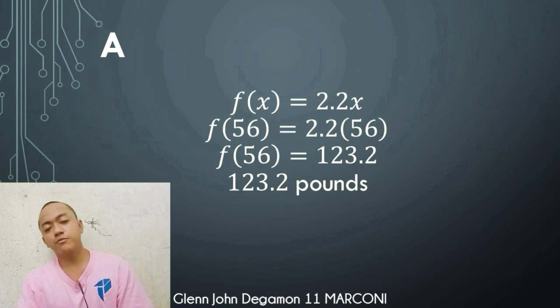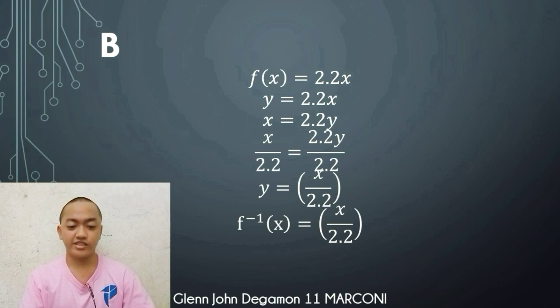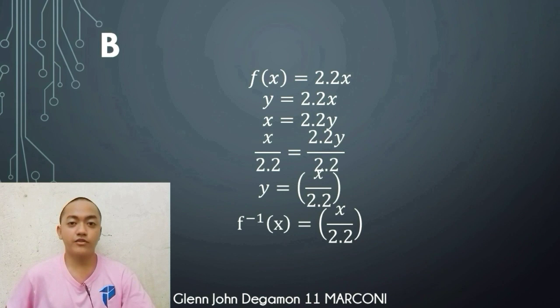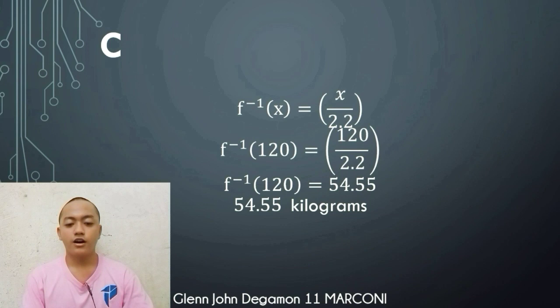For letter b, we find the inverse function. Starting with f of x equals 2.2x, let y equal f of x: y equals 2.2x. Swap variables: x equals 2.2y. Divide both sides by 2.2: y equals x over 2.2. Therefore, f inverse of x equals x over 2.2. For letter c, using the inverse function to convert 120 pounds into kilograms: f inverse of 120 equals 120 over 2.2, which equals 54.55. Therefore, 120 pounds equals 54.55 kilograms.